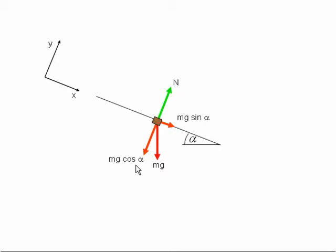Now, because there is no acceleration perpendicular to the slope, we don't need to concern ourselves about N and Mg cos alpha because they cancel one another out.